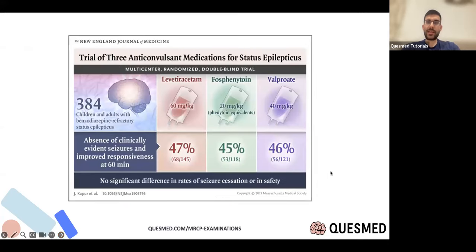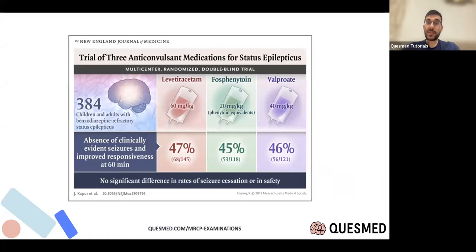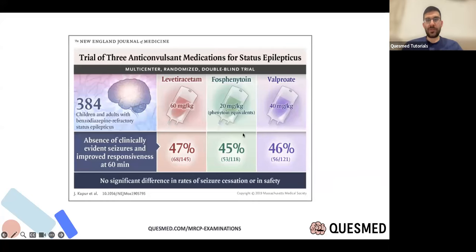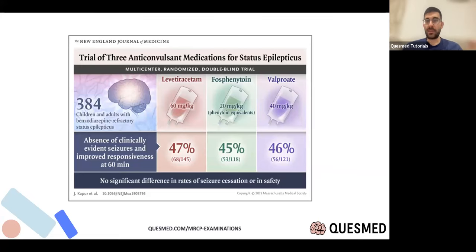In status epilepticus, if benzodiazepines don't work, you can give phenytoin, valproate, or levetiracetam. Levetiracetam (Keppra) is the easiest to get and most commonly used nowadays. There's also the concept of enzyme inducers and inhibitors — you get them a lot with antiepileptics. A useful mnemonic is 'sick faces' for enzyme inducers. The classic questions involve the relationship to warfarin INR and the oral contraceptive pill. Worth memorizing.